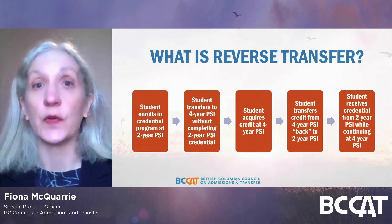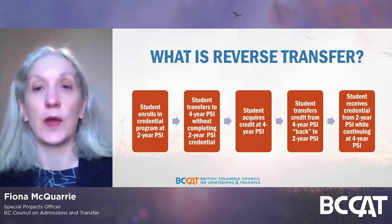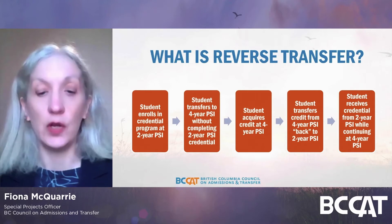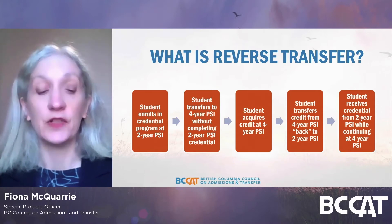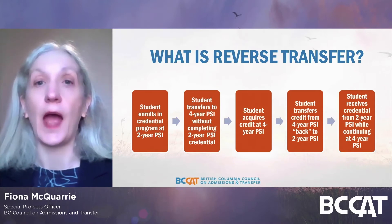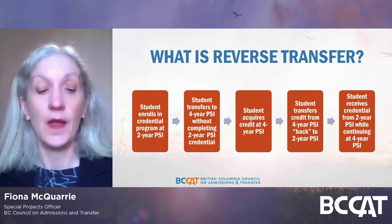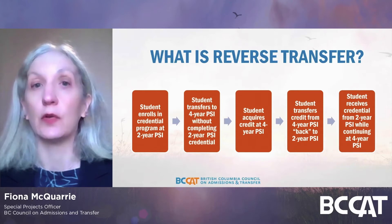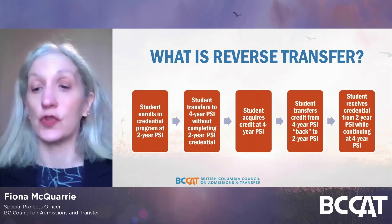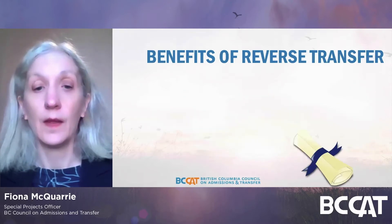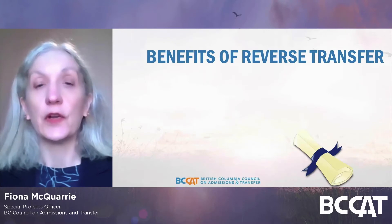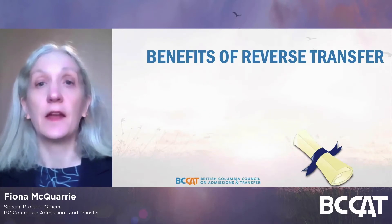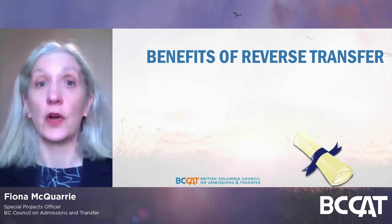If they acquire credits at that four-year institution that would complete the program at the two-year institution, reverse transfer allows them to transfer those credits back to the two-year institution and receive the two-year credential — but this happens while they continue to be enrolled at the four-year institution. They don't have to complete their four-year degree to receive the two-year degree at the other institution. Reverse transfer started to be used in the US around 2010, and since then there's been a fair amount of research on its outcomes.